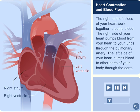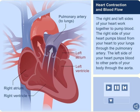The right and left sides of your heart work together to pump blood. The right side of your heart pumps blood from your heart to your lungs through the pulmonary artery. The left side of your heart pumps blood to other parts of your body through the aorta.